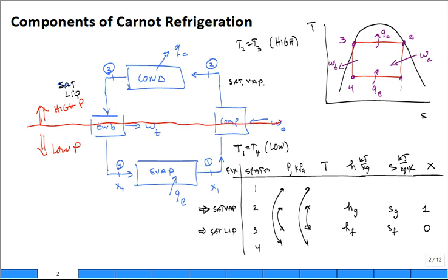I pause, I stop. Does that TS diagram make sense? What are we saying about this compressor? It's reversible and no heat transfer or adiabatic. Hence, it's isentropic compression.